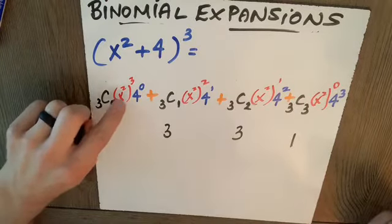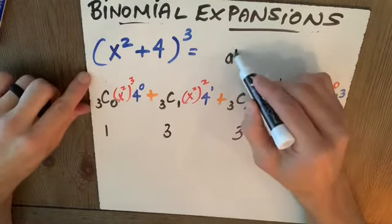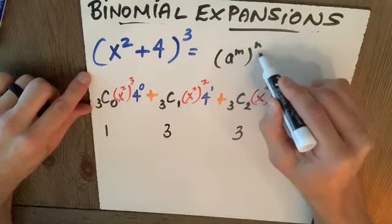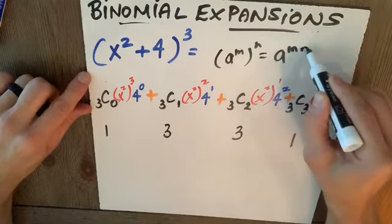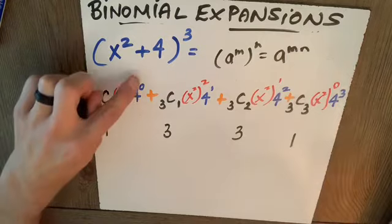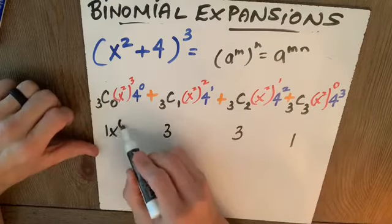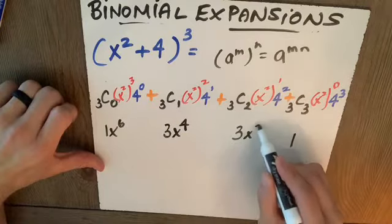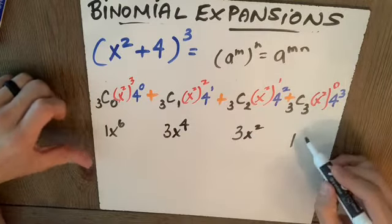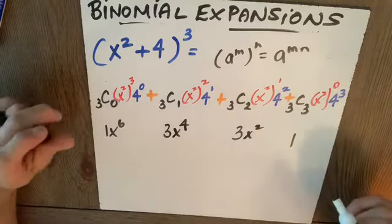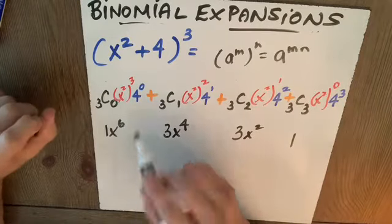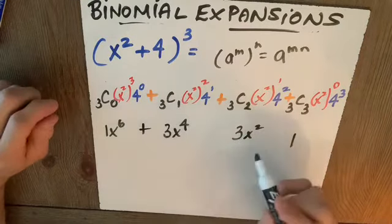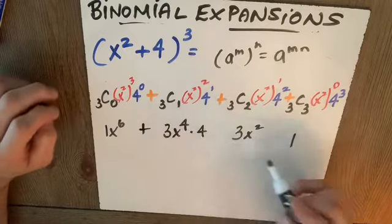Now, x squared to the third, I have to know a to the m to the n power is a to the mn. Guys, I'm multiplying these exponents. So this is x to the sixth, x to the fourth, x squared, and this will be x to the zero, which I won't write. And now, 4 to the zero is 1, which I won't write. And I have times 4 to the 1. 4 squared is 16.